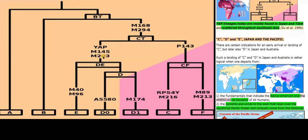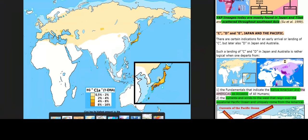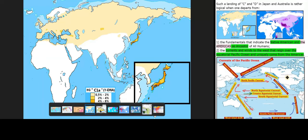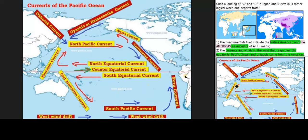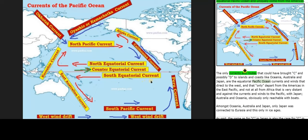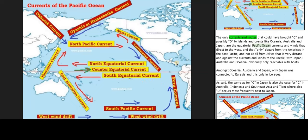There are certain indications for an early arrival or landing of C, but later also D, in Japan and Australia. Such a landing of C and D in Japan and Australia is rather logical when one departs from: 1. the fundamentals that indicate the Native American and the Americas as ancestor of all humans; 2. the currents and winds to the west that reign over the equatorial Pacific Ocean and uniquely come from the Americas. The only currents and routes that could have brought C and possibly D to islands and coasts like Oceania, Australia and Japan are the equatorial Pacific Ocean currents and winds that direct to the west, and that only depart from the Americas in the East Pacific — not at all from Africa, which is very distant and against the currents and winds to the Pacific — with Japan, Australia and Oceania obviously only reachable with boats.